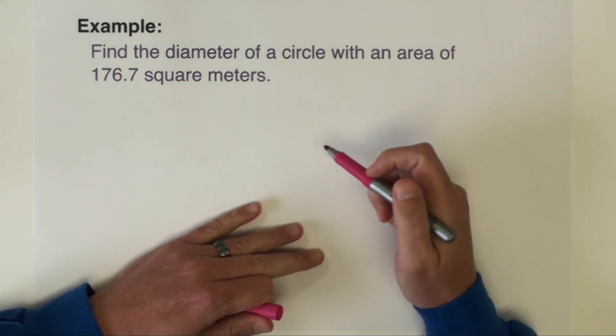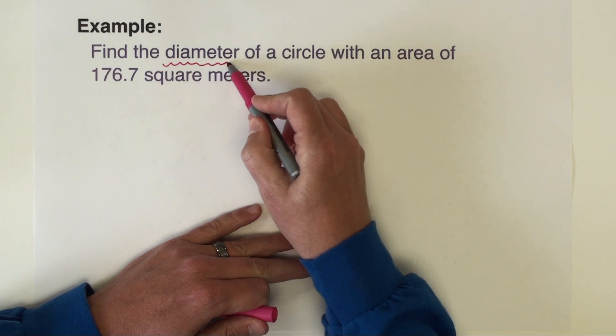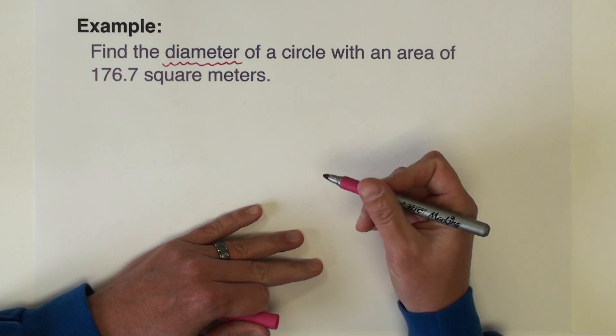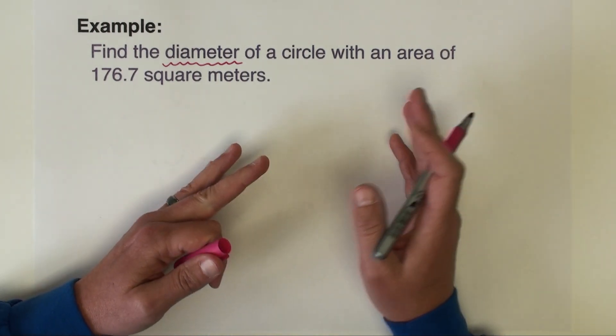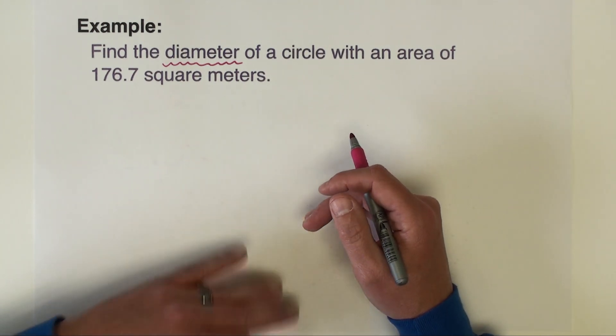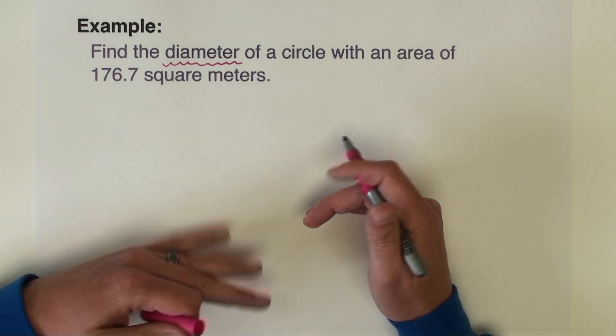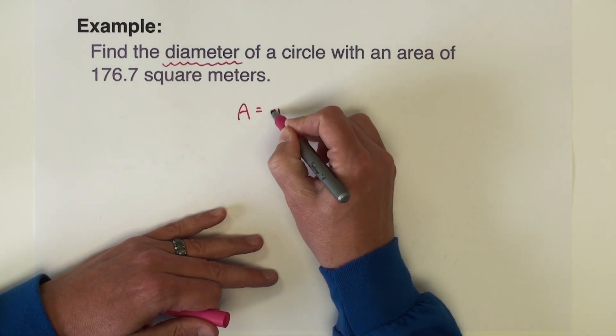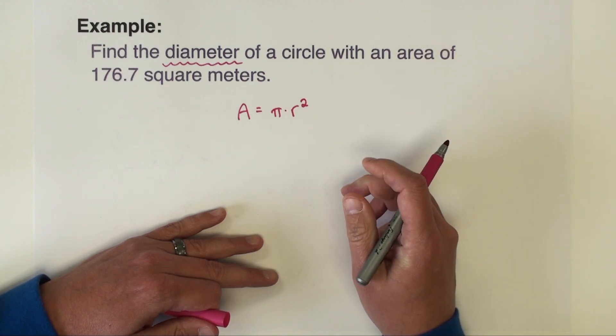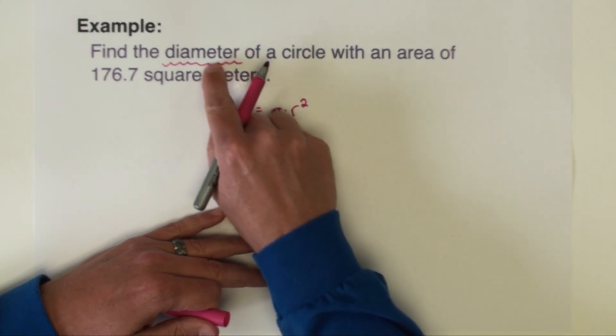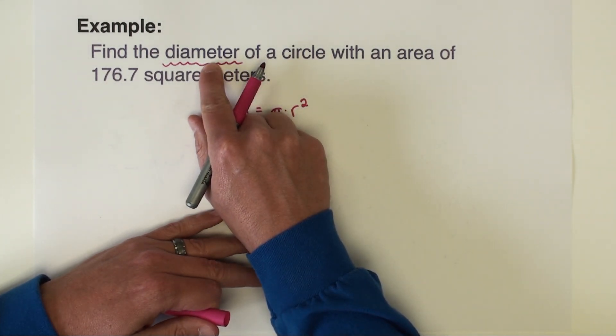The next example problem is asking us to find the diameter of a circle with an area of 176.7 square meters. Now first of all, we don't have a formula that we're going to use for area in terms of diameter. So let's just use the area formula that we have, and that is that the area equals pi times the radius squared. So what we're going to do first is we're going to find the radius and then we'll do a very simple conversion to convert the radius into the diameter at the end of the problem.